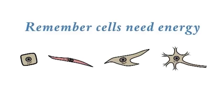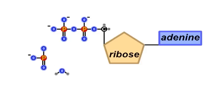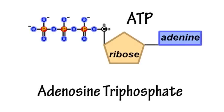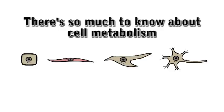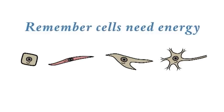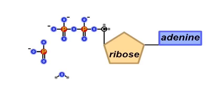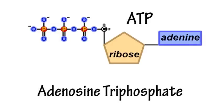Remember: cells need energy, and so they generate a molecule called ATP, which is adenosine triphosphate. There's so much to know about cell metabolism, but you'll get by if you recite this daily catechism: Remember cells need energy, and so they generate a molecule called ATP, which is adenosine triphosphate.